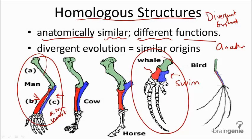In the evolutionary framework, homology is to be expected among closely related species, where each homology, if common ancestry was true, should be present in its corresponding phylogeny as opposed to others. Falsification for common ancestry would be if homologous features were to be present across distant, different evolutionary branches, because that would defy the unique patterns of similarity.